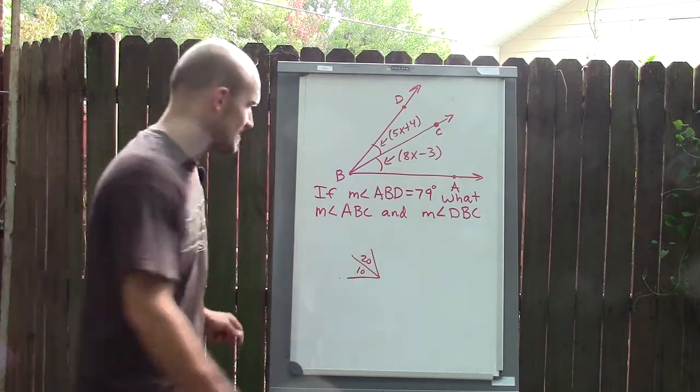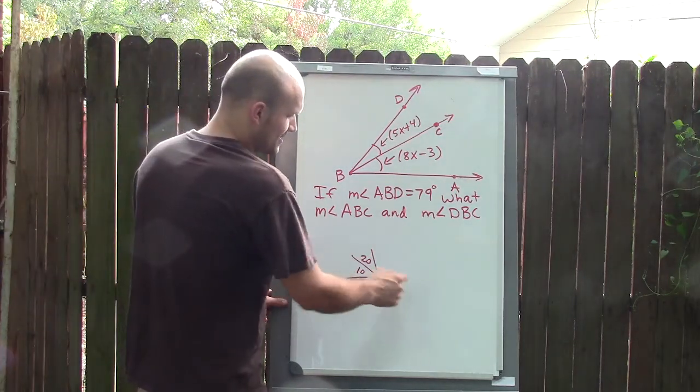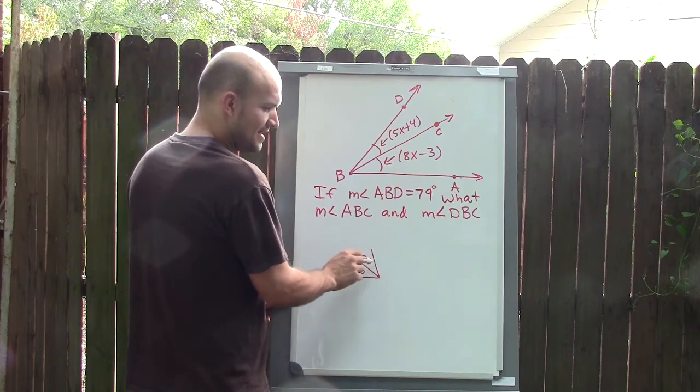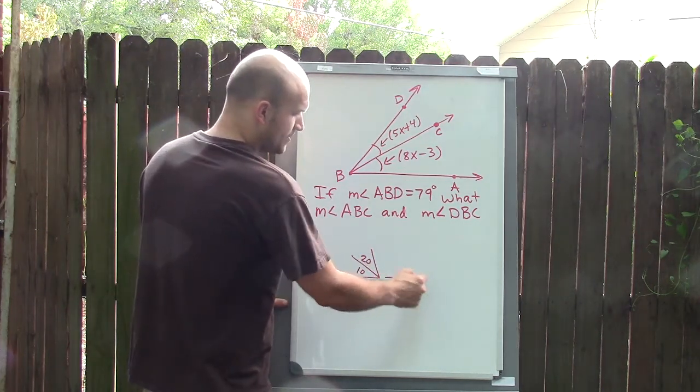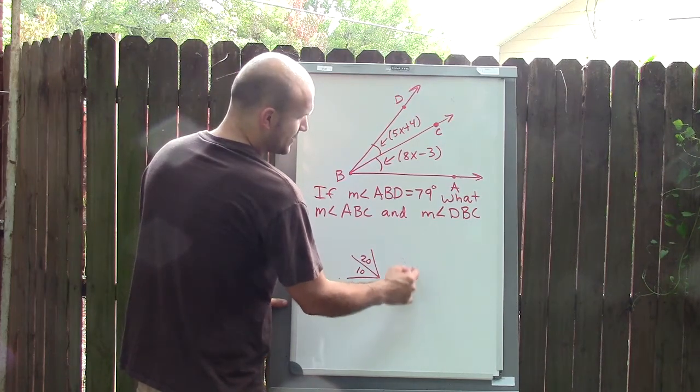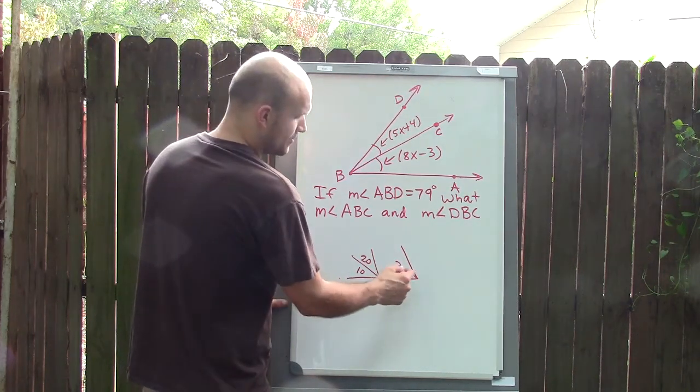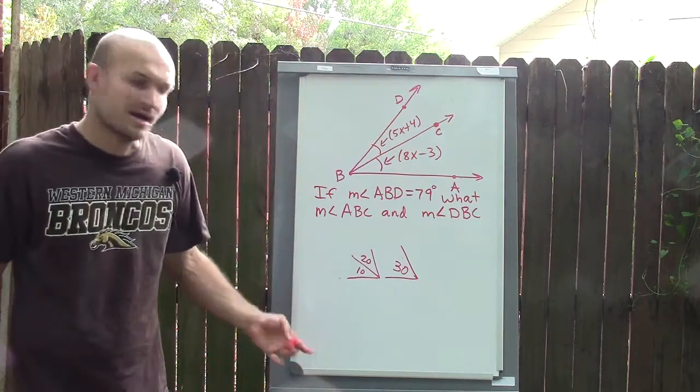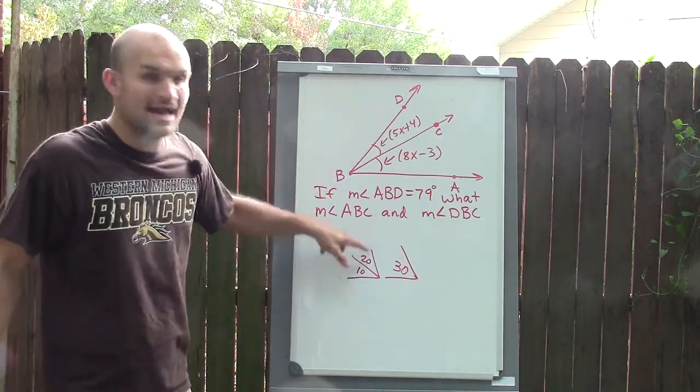If the smaller angle was 10 and this one was 20, what is the general size of those two angles combined together? Well, you could say that's a 30 degree angle, right? So if I have two smaller angles, them added up gives me that larger angle.